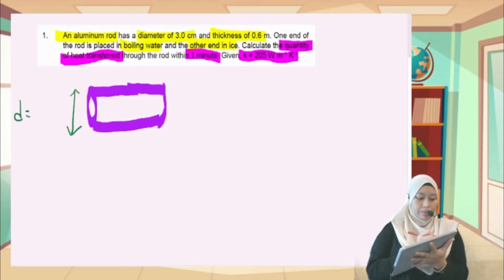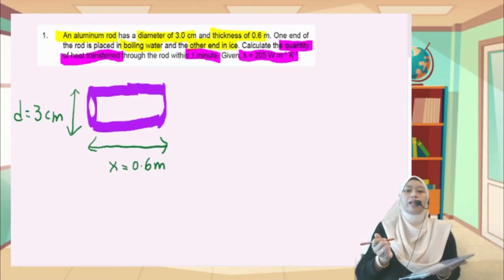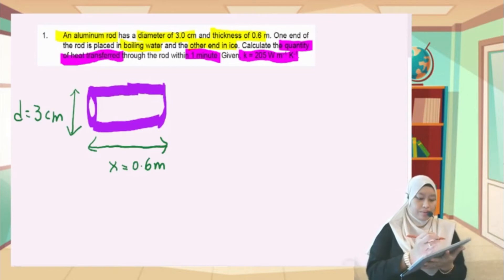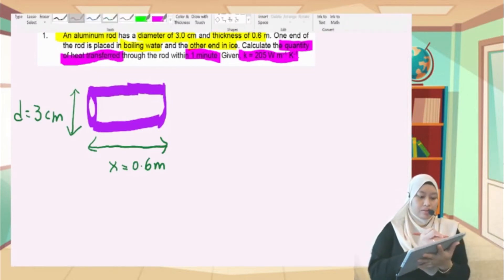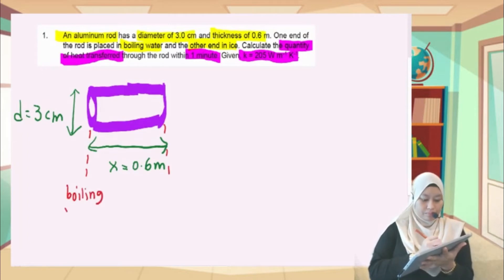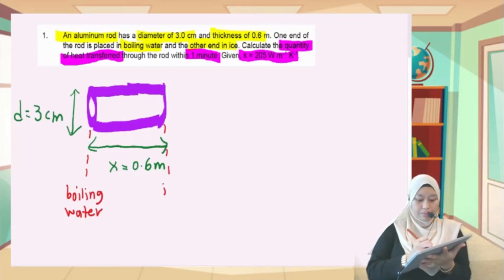The diameter for this aluminum rod is 3 cm and the thickness is 0.6 meters. So this is how it looks like. Now, let's say one end of the aluminum is put in boiling water and the other end is put in the ice.